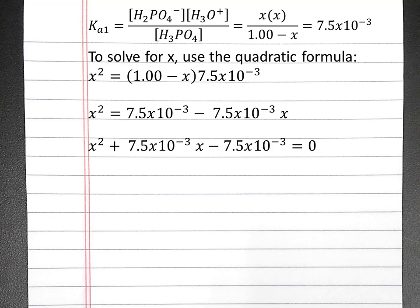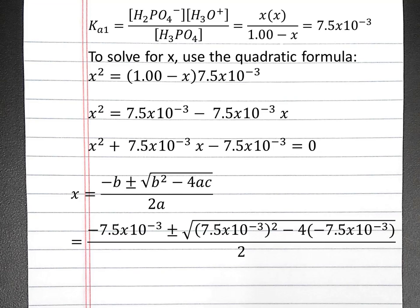Now we have our equation in the form that we need for the quadratic formula. So the quadratic formula is x equals negative b plus or minus the square root of b squared minus 4ac divided by 2a. We can plug in our values for a, b, and c: a is 1, b is 7.5 times 10 to the negative third, and c is negative 7.5 times 10 to the negative third.